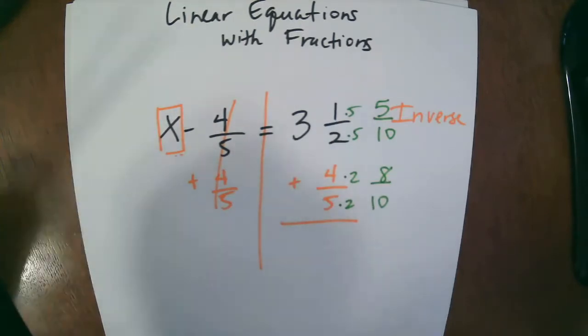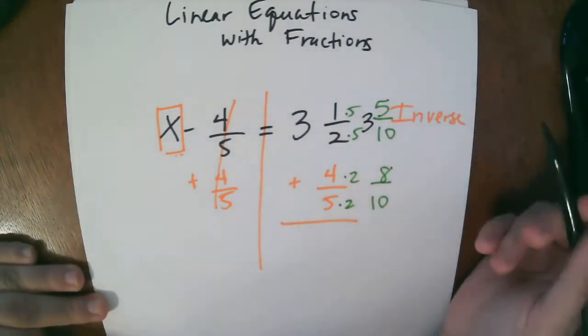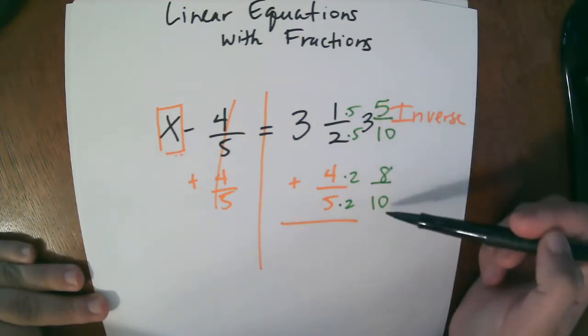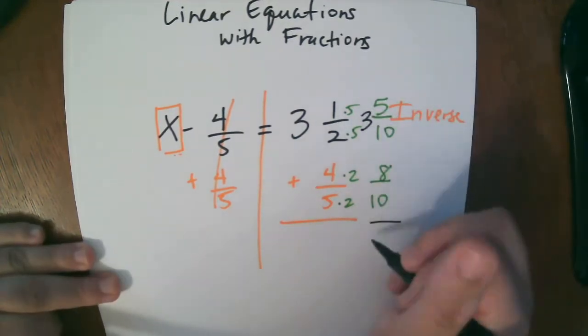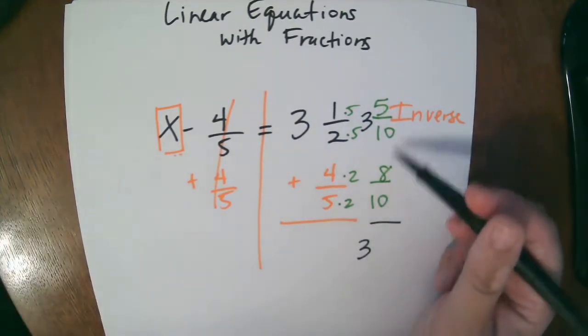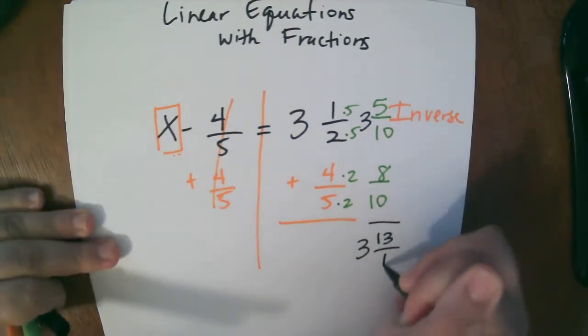And don't forget that whole number. That whole number is still there. I'm just going to kind of squeeze it in right there. So now we have 3 and 5 tenths plus 8 tenths. So let's go ahead and add. So the 3, we just bring it on down. It's not added to anything.